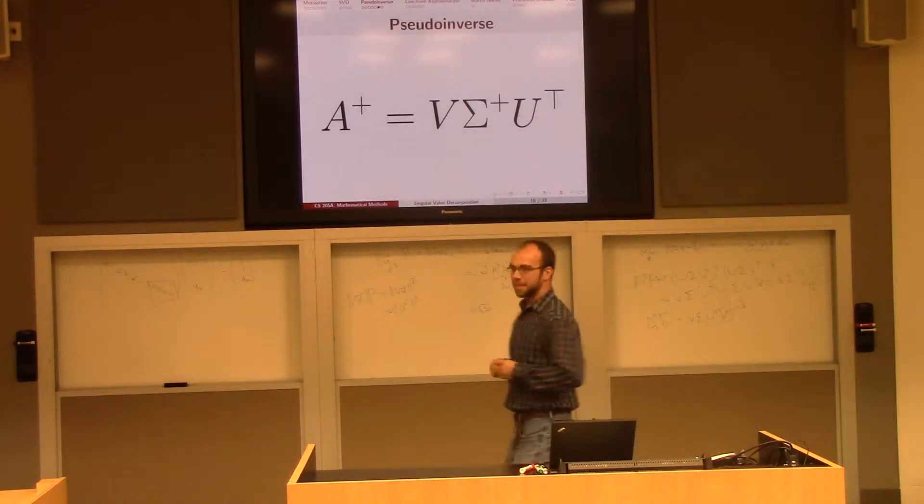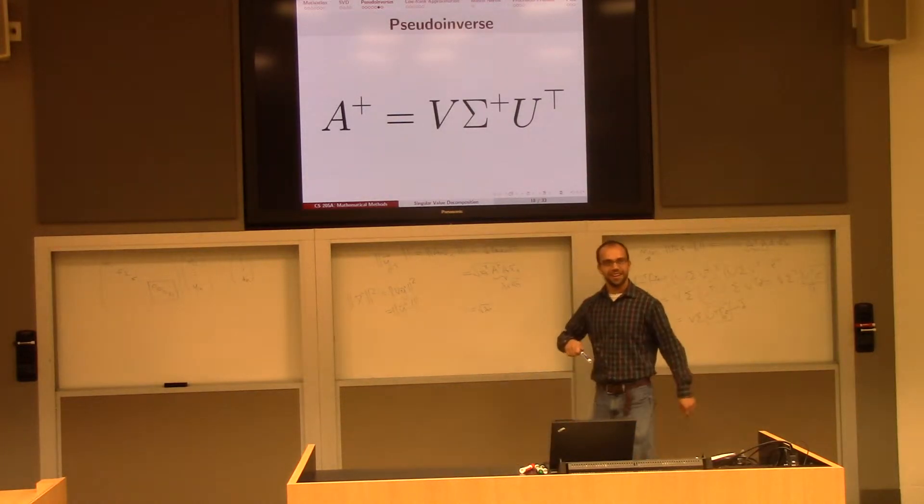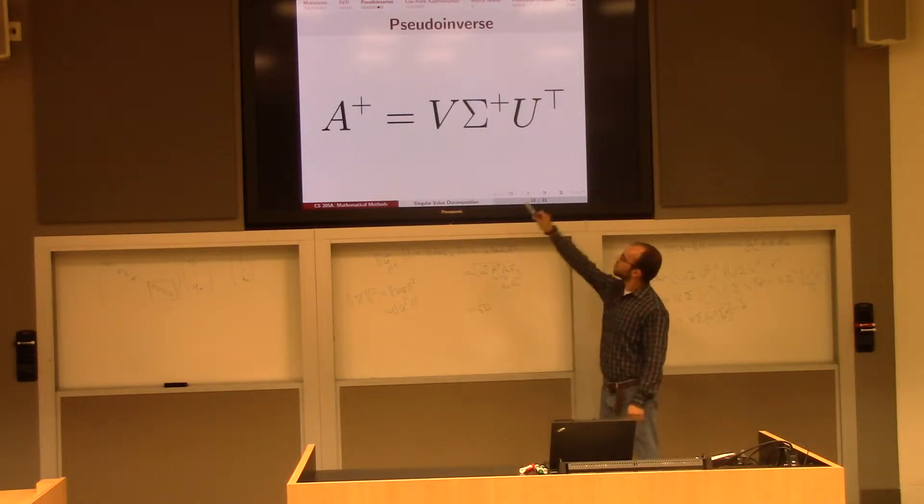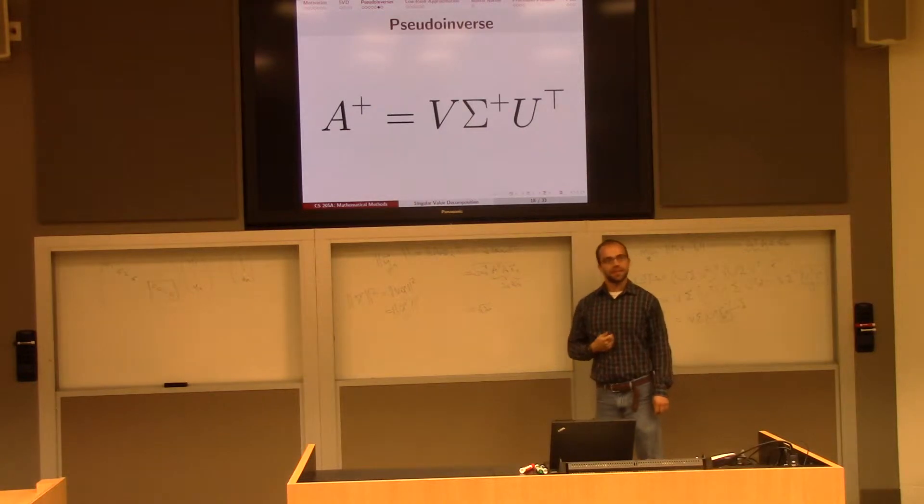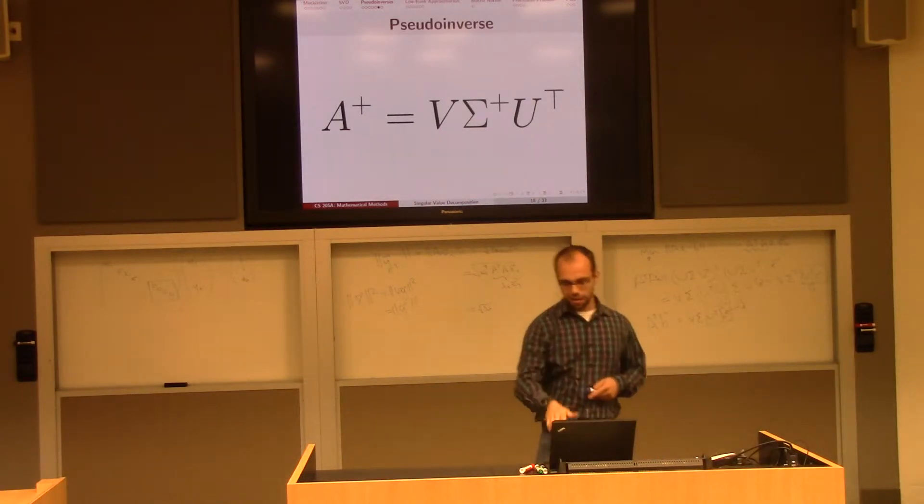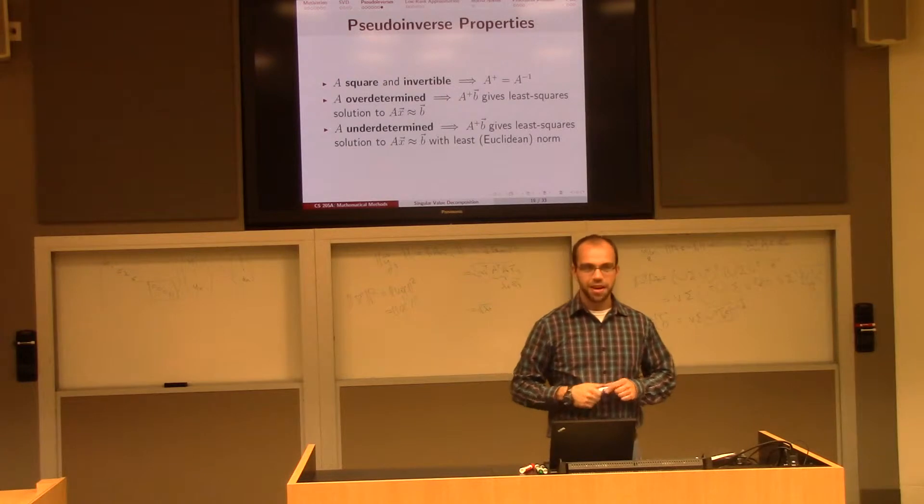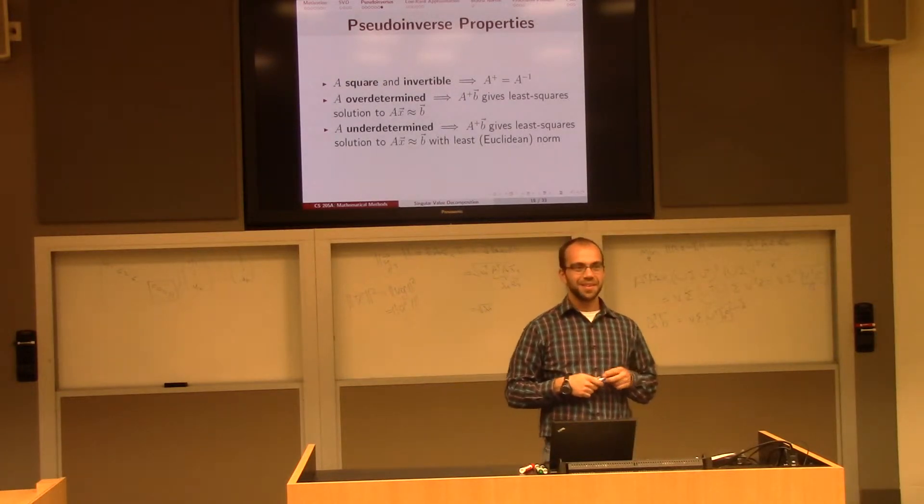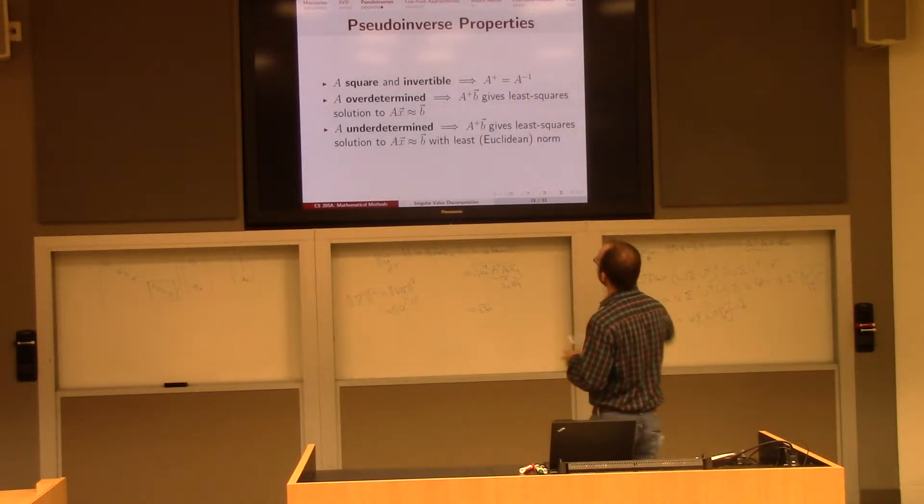So in particular, it's a big text, so then it's important. We can define the pseudo inverse of a, a plus, to be exactly that thing that we got out of our optimization. So what are some properties of a plus? Well, if a is square and invertible, then by our argument we know that a plus is equal to a inverse.